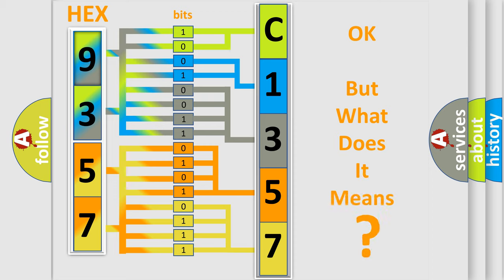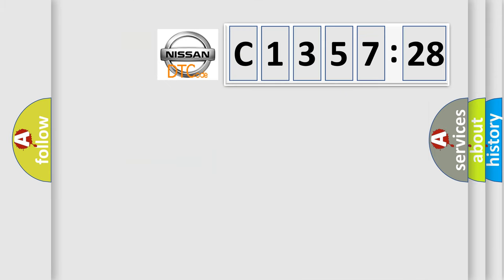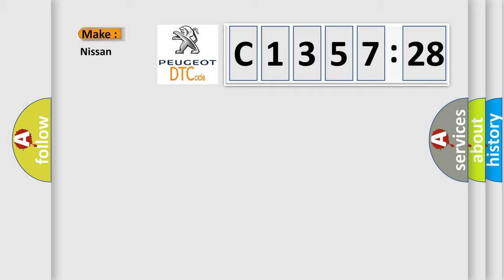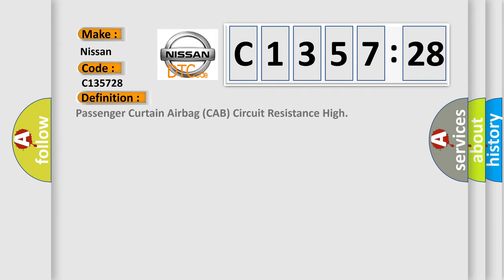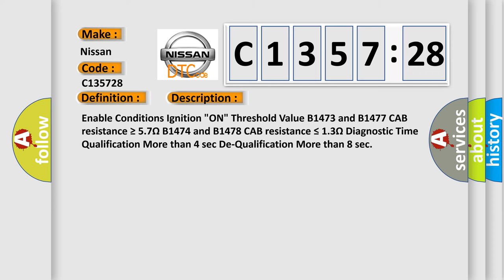The number itself does not make sense if we cannot assign information about what it actually expresses. So, what does the diagnostic trouble code C135728 interpret specifically for Nissan car manufacturers? The basic definition is: passenger curtain airbag cab circuit resistance high.